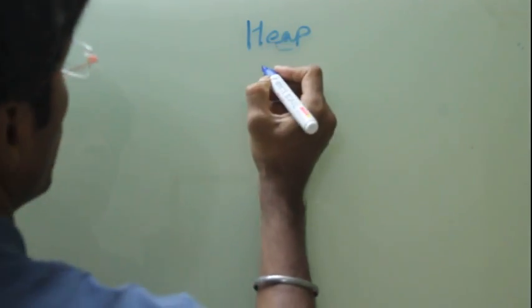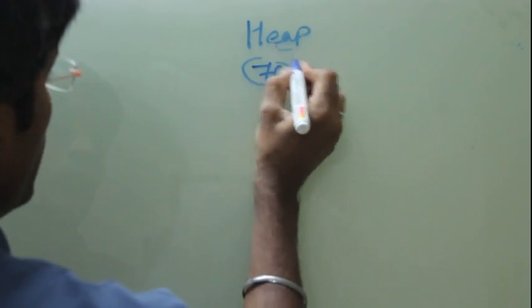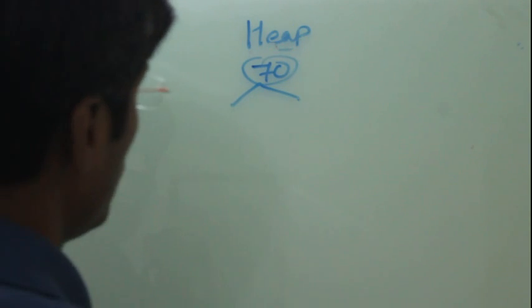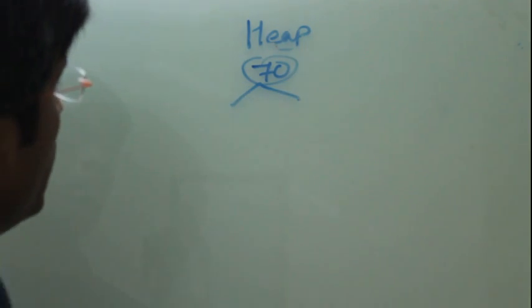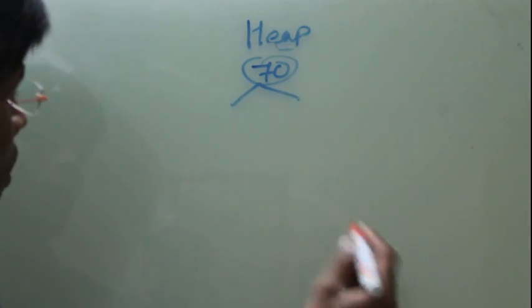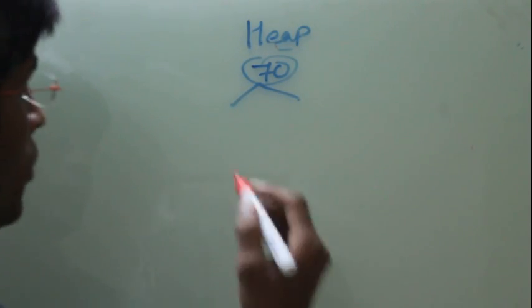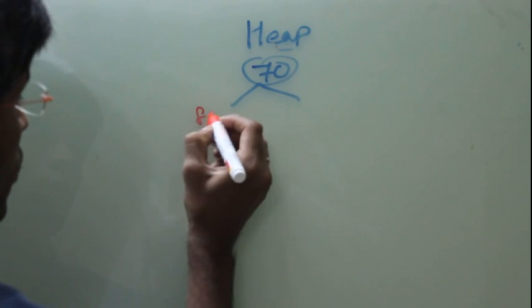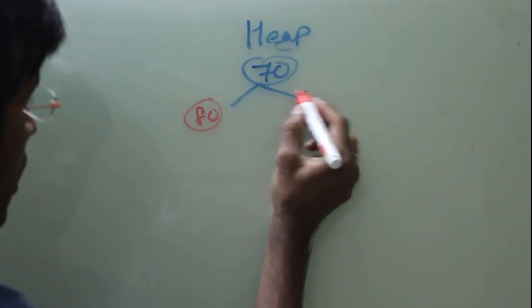So if you draw a tree with this approach, let's say I have a parent with element 70. What the property says is the parent will always be less, so the left and right child will always be greater than 70, means it has to be 80 and 90.